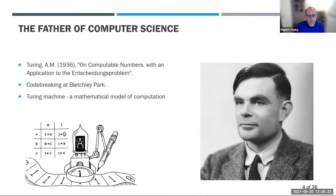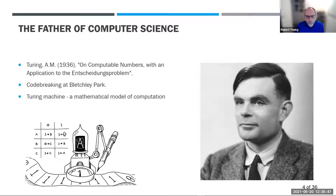The person we have to thank for that is Alan Turing, the father of computer science. His research on computation and universal Turing machines laid the foundations for computer science, and of course he's also famous for his code-breaking work during the Second World War at Bletchley Park.